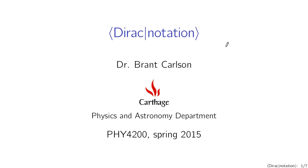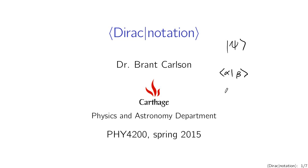Throughout our discussion of the mathematical structure of quantum mechanics, I've been writing down things like psi with a vertical bar on the left and an angle bracket on the right — the notation we've been using for vectors in the Hilbert space. I've also been writing things like alpha beta with angle brackets on either side and a vertical bar in the middle, representing inner products between two vectors in that Hilbert space.